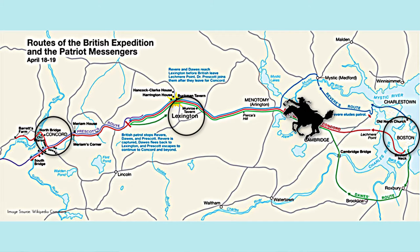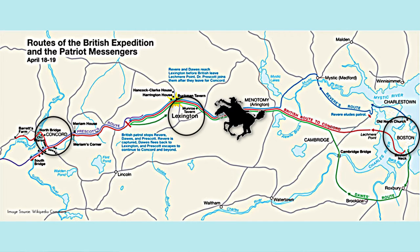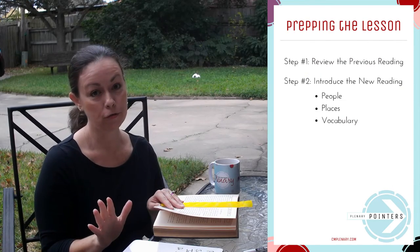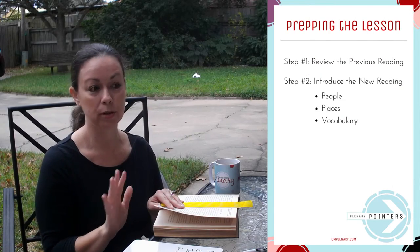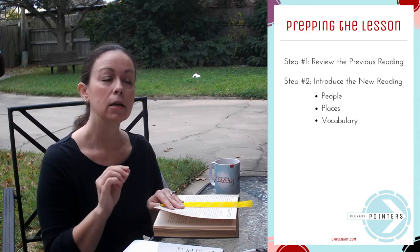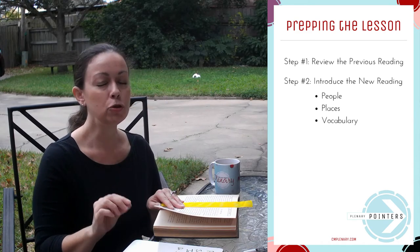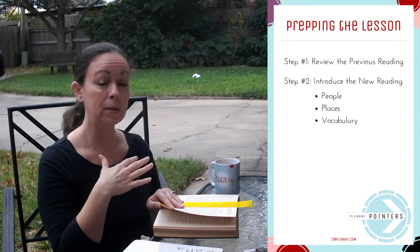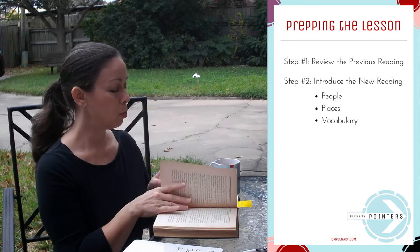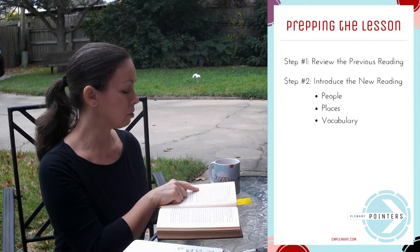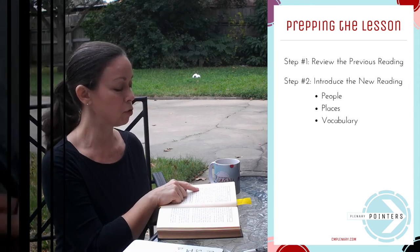The next step is to offer a few vocabulary words, but not too many. You don't want to overwhelm your student with lots of new vocabulary words. You just want to pick out maybe two or three that they wouldn't understand from the context of the reading. And one of the ones you can see here — I have circled the word 'stores.'